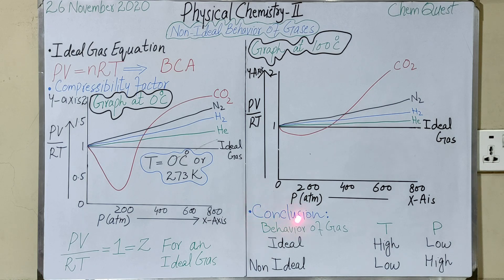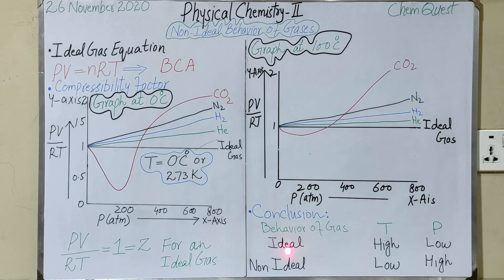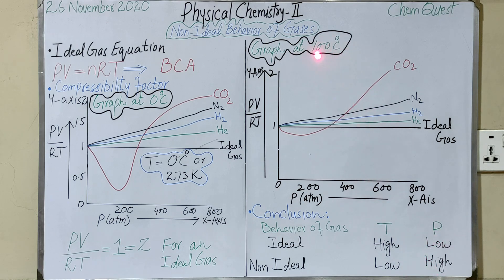So the conclusion we can draw is that a gas can show somewhat ideal behavior when the temperature is high and the pressure is low. Not totally ideal, but comparatively ideal. And gas behavior will be non-ideal when the temperature is low or the pressure is high. At zero degrees centigrade we saw large deviations, whereas at 100 degrees centigrade the overall deviation is much lower.